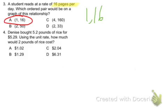Okay, moving on to 4. Denise bought 5.2 pounds of rice for $5.29. Using the unit rate, how much would 2 pounds of rice cost? Okay, so this is important because this is a multi-step problem.